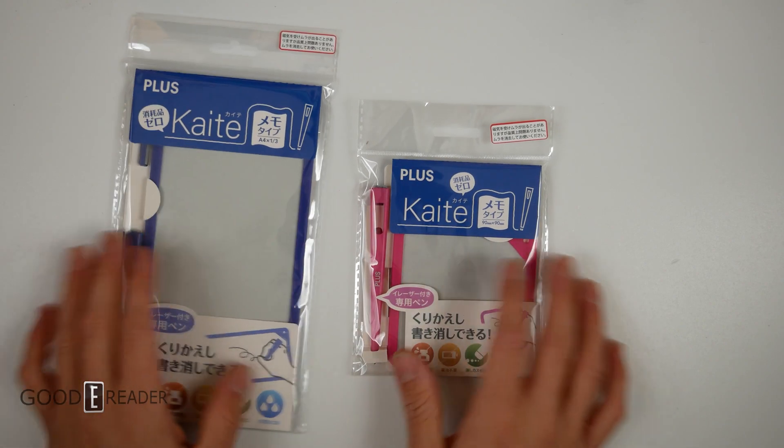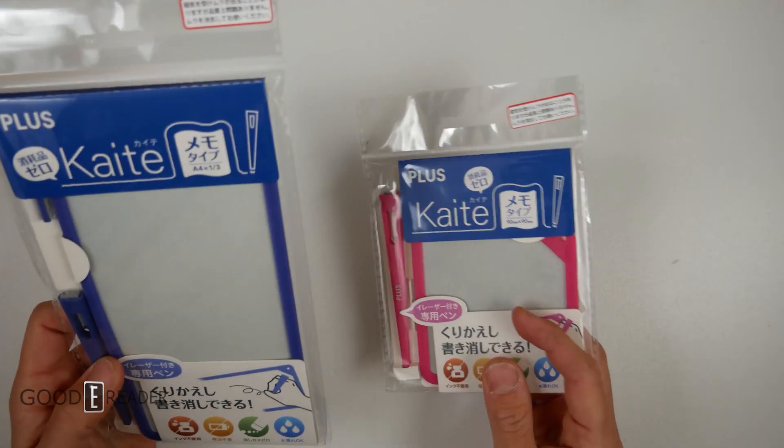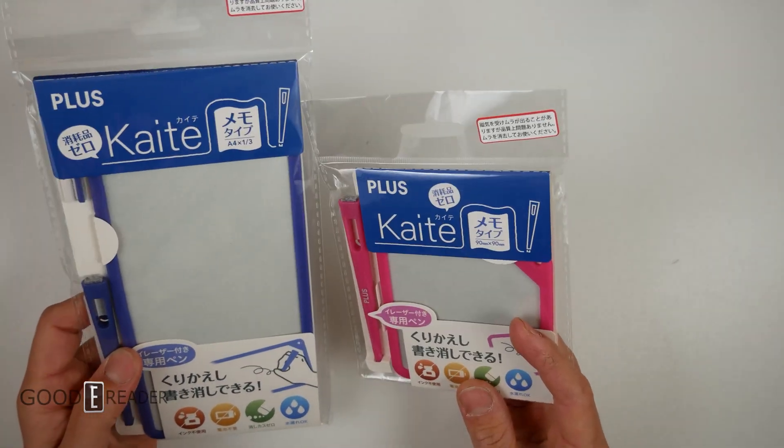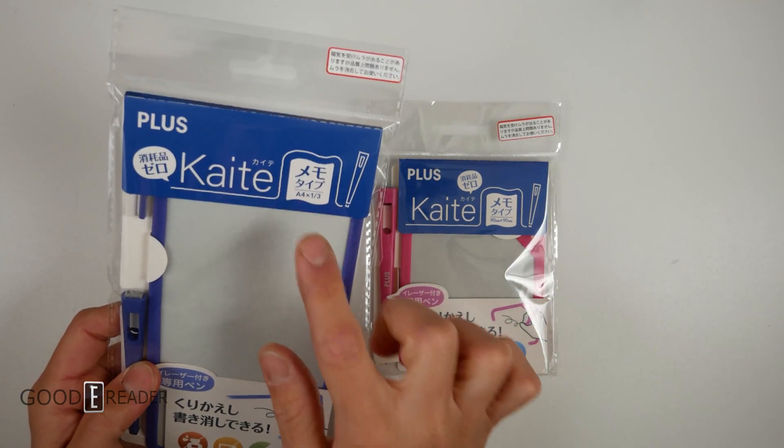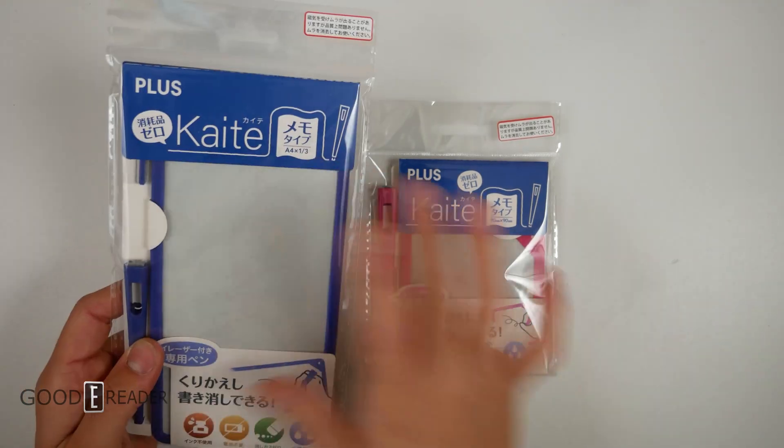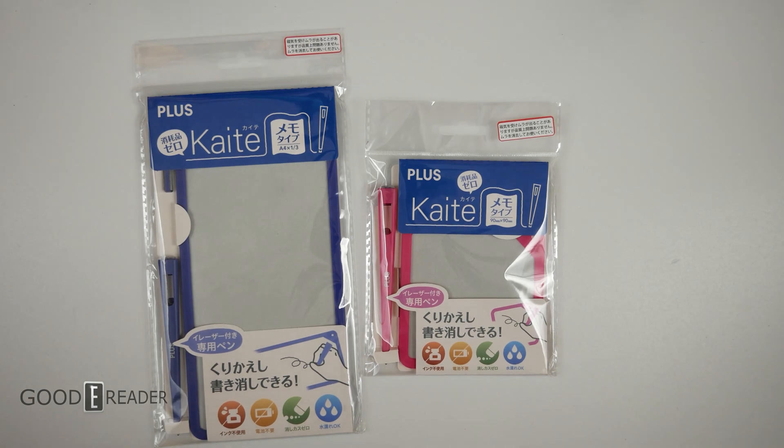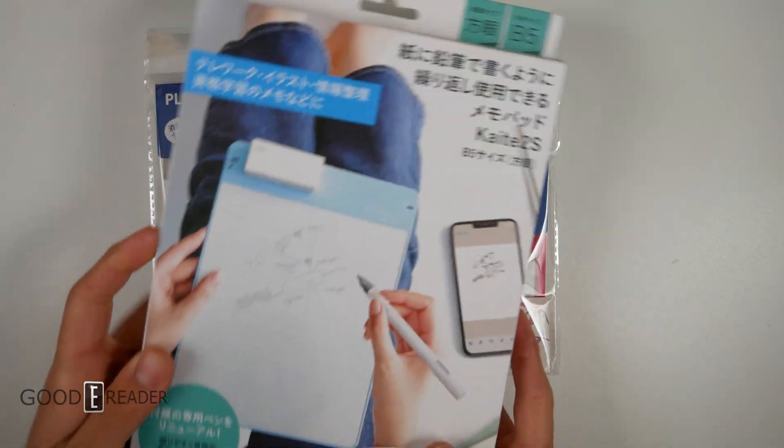These are the Kaite Memo Pads. They are both different sizes. This one is a 90 by 90 and this one is an A4, but only one third of the size of an A4. And if you know PLUS, these guys have multiple different layouts.